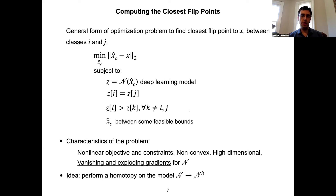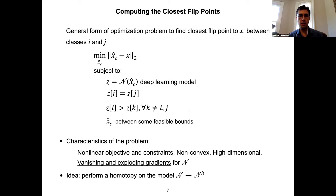There can be other constraints as well. The domain is usually bounded — pixel values are defined within a certain range — so we can impose those to ensure we don't exit the defined regions. One might also want to restrict certain colors or certain regions of an image from changing, and these can be added to the constraint list. This optimization problem is nonlinear in objective and constraints, non-convex, and usually very high-dimensional.